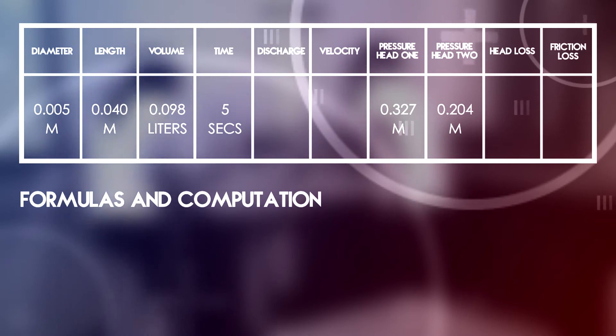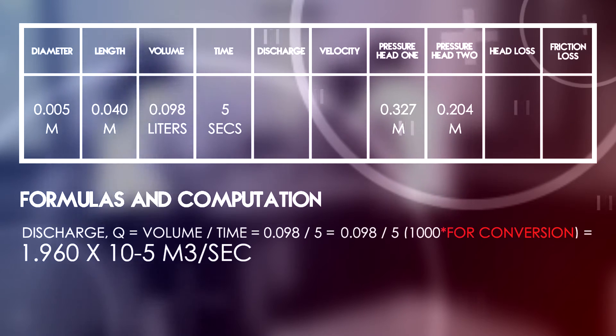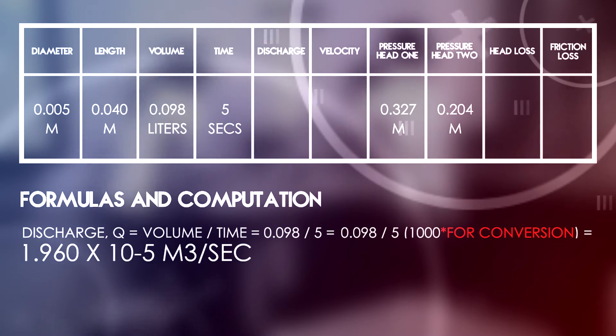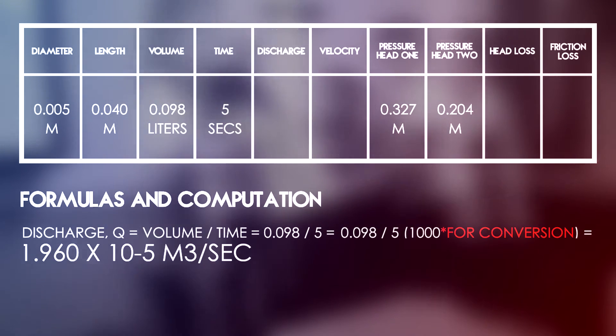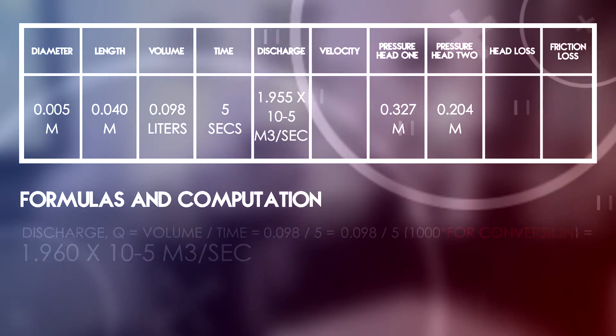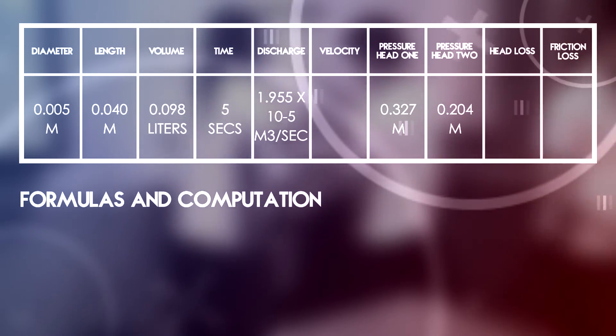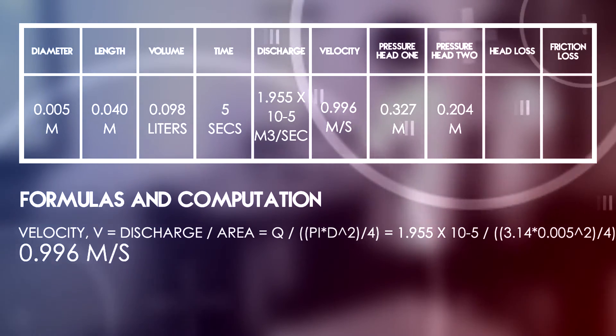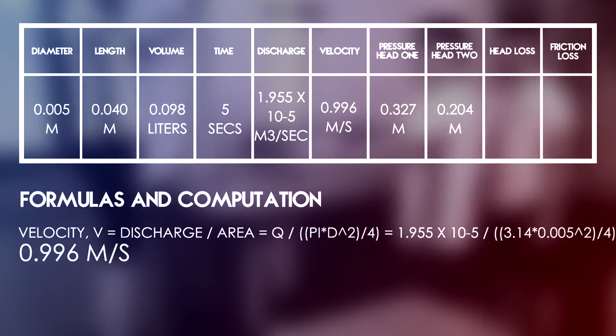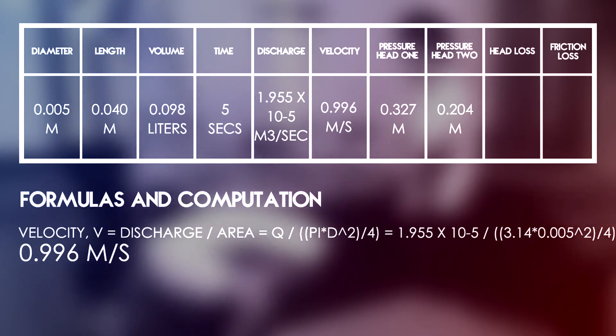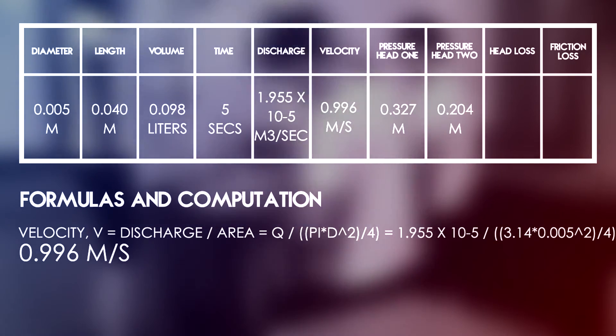You can compute for the other datas by means of the following formulas. Discharge equals volume over time, so 0.098 over 5 equals 1.96 times 10 raised to negative 3 meter cube per second. Two trials were made in determining the discharge, so the QAV is 1.955 times 10 raised to negative 3. The area is pi over 4 times D squared, where D is the diameter of the pipe.